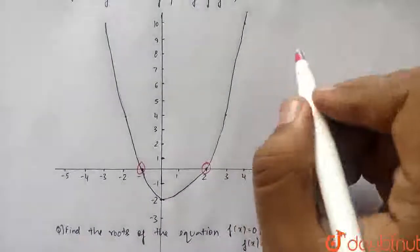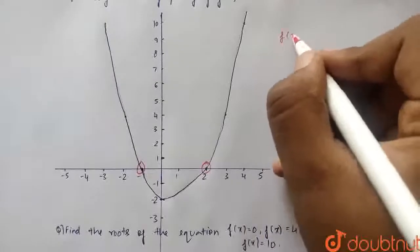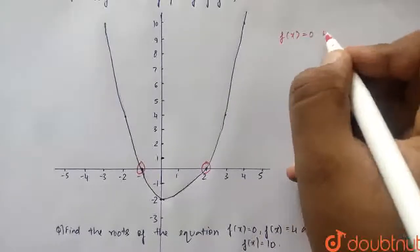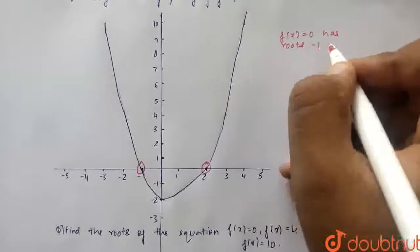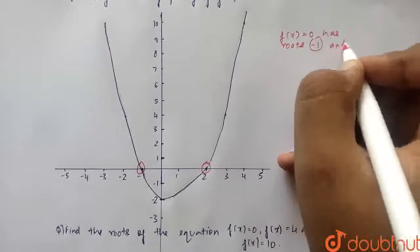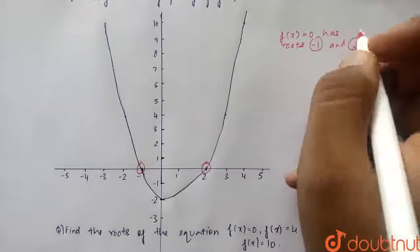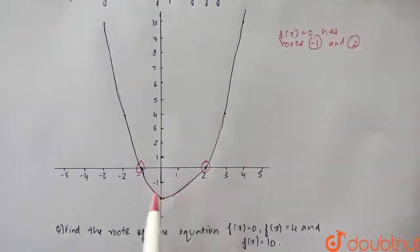So f of x is equal to 0 has roots minus 1 and 2, which I have plotted in this graph, minus 1 and 2.